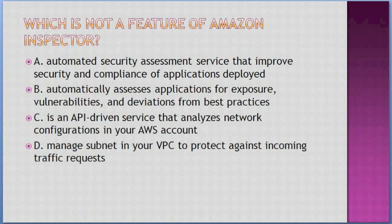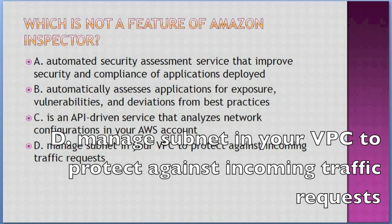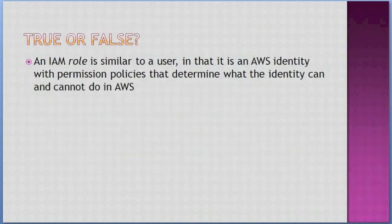Which is not a feature of Amazon Inspector? Options: A. Automated security assessment service that improves security and compliance of deployed applications, B. Automatically assesses applications for exposure, vulnerabilities, and deviations from best practices, C. Is an API-driven service that analyzes network configurations in your AWS account. D. Manages subnet and VPC to protect against incoming traffic requests. Answer: C. True or false — an IAM role is similar to a user; it is an AWS identity with permission policies that determine what the identity can and cannot do in AWS. Answer: True.